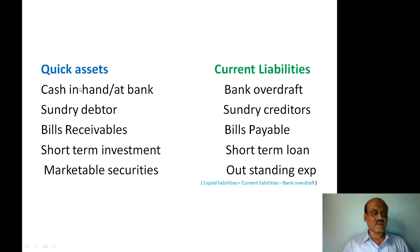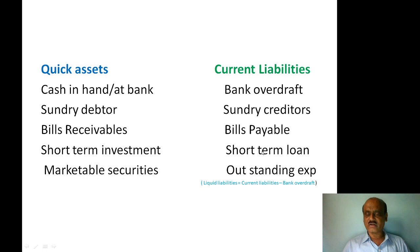Quick assets include: cash in hand, cash at bank, sundry debtors, bills receivable, short-term investments, and marketable securities. Current liabilities include: bank overdraft, sundry creditors, bills payable, short-term loans, and outstanding expenses. Liquid liabilities similarly include bank overdraft, sundry creditors, bills payable, short-term loans, and outstanding expenses.